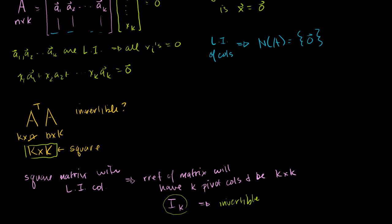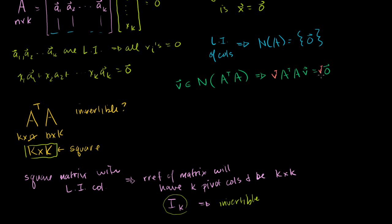Let's say I have some vector v that is a member of the null space of A transpose A. That means A transpose A times v equals the 0 vector. Now, what happens if I multiply both sides on the left by v transpose? You can view a row vector times a column vector as their dot product, so the right-hand side — dotting anything with the 0 vector — gives the 0 vector.